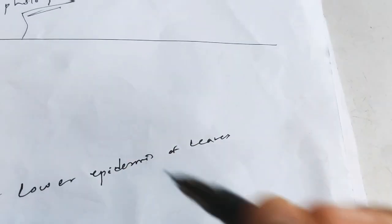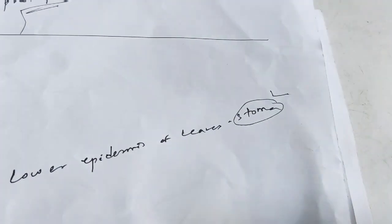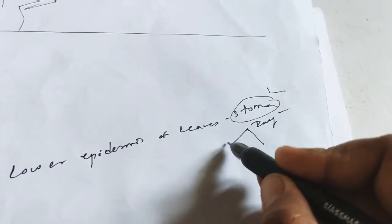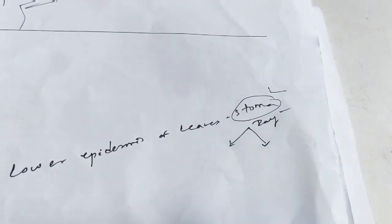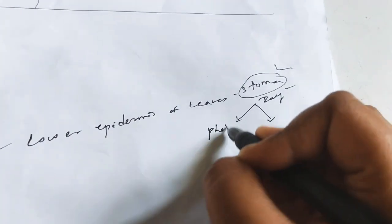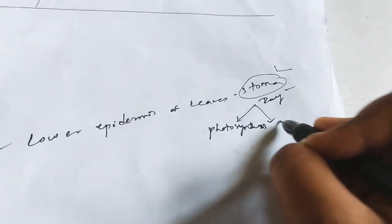Stoma are mostly found in the lower epidermis of the leaf. The more percentage of stoma are found in the lower epidermis. These stoma can be open or closed. The stoma are open during daytime. Due to the opening of stoma, two functional things happen.